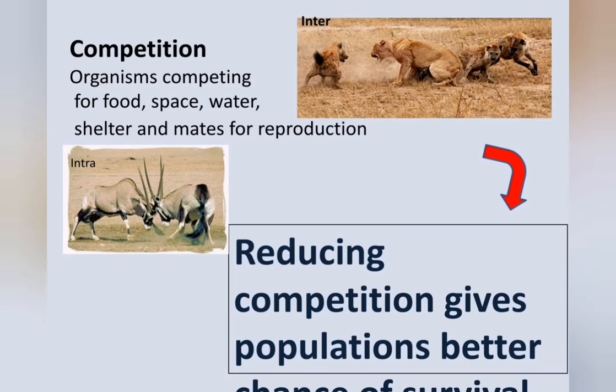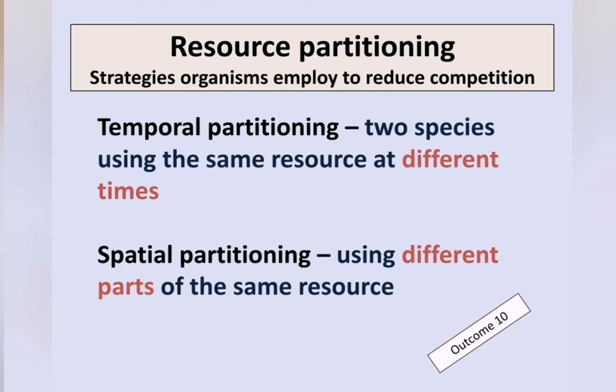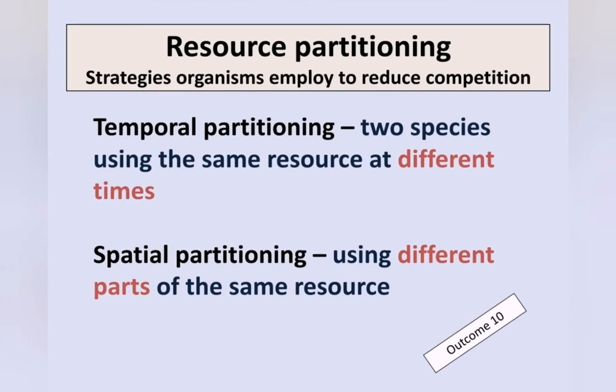Organisms can compete for food, space, water, shelter, and mates for reproduction. But if they can reduce the competition, it gives them a better chance of survival. That brings us to resource partitioning, which is any strategy an organism employs to reduce competition. There are two types of resource partitioning.